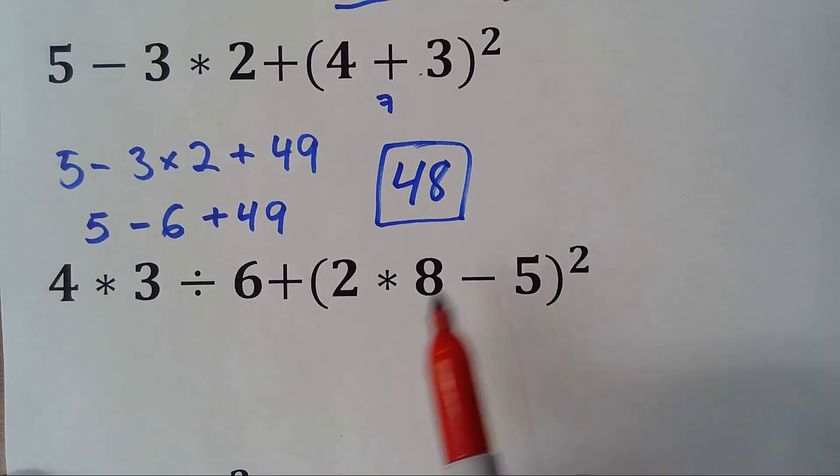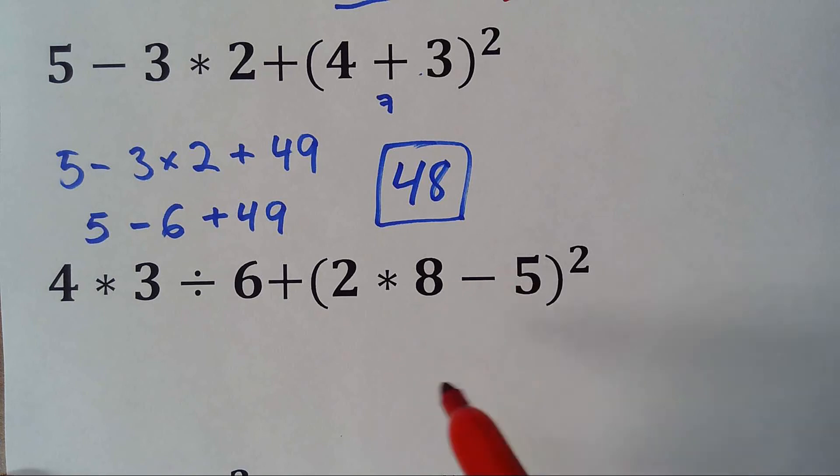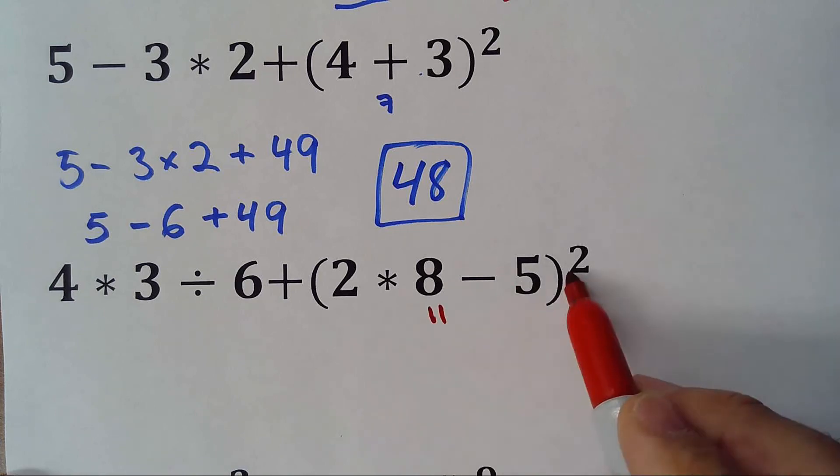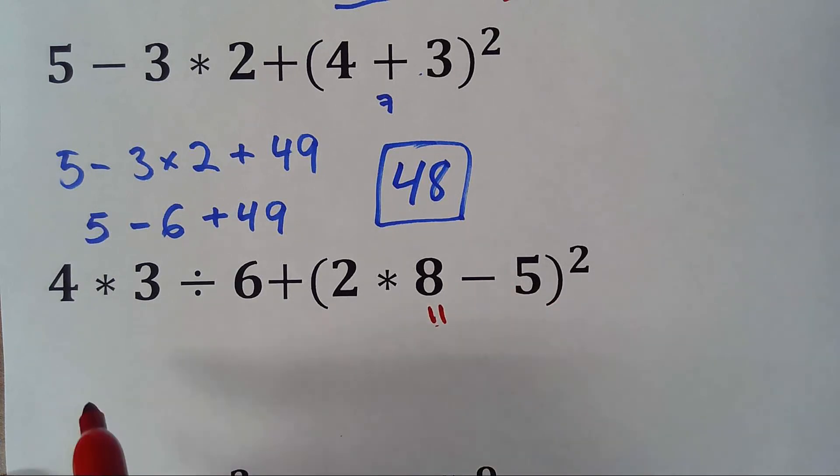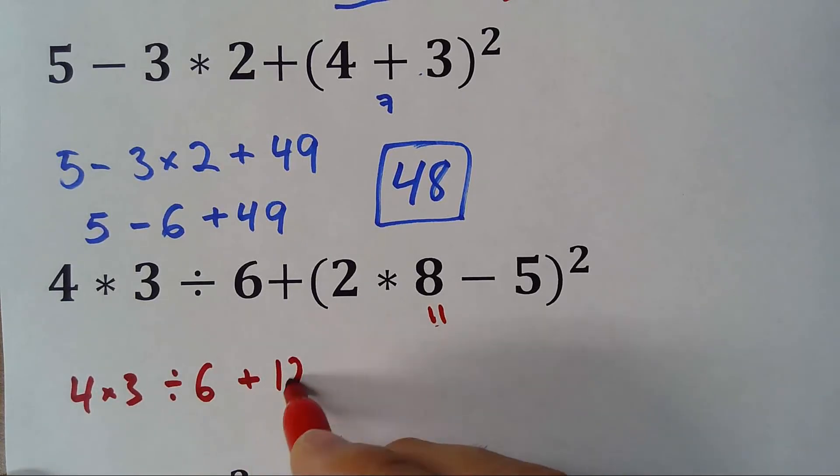Okay, we'll go parentheses first, now inside the parentheses we have a multiplication and a subtraction, so we do multiplication first. This is 16 minus 5 is 11, so 11 squared is 121, so 4 times 3 divided by 6 plus 121.